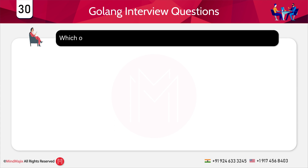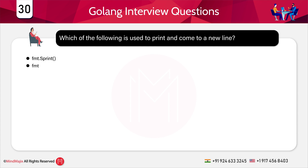Which of the following is used to print and move to a new line? Options: a) fmt.Sprintf, b) fmt.Println, c) fmt.Printf, d) none of the above. The answer is b) fmt.Println. With fmt.Println, you can print a statement and automatically move to a new line. Thanks for watching — I hope these training videos help you in the future and best of luck with Golang.